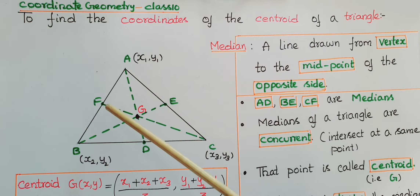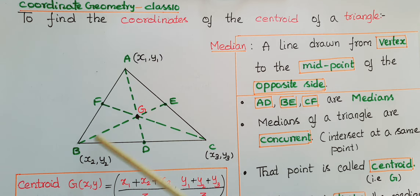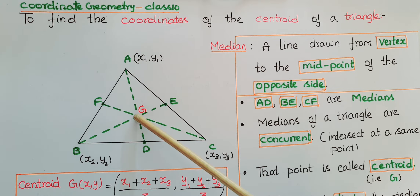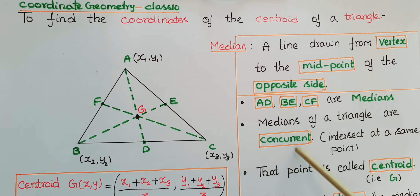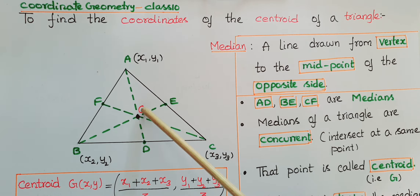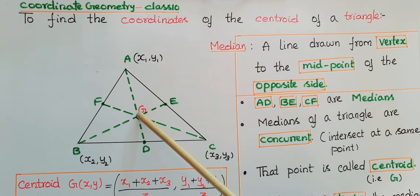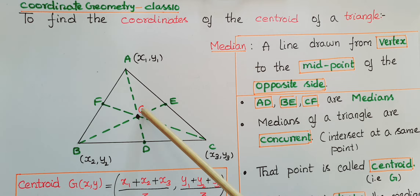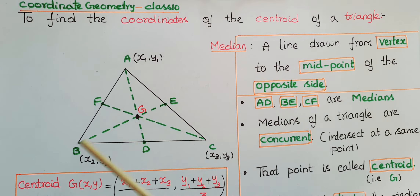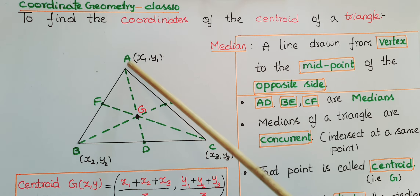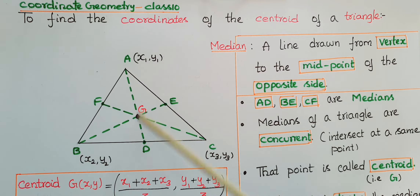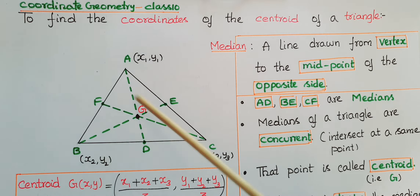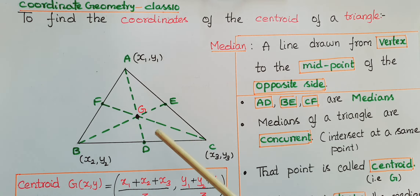If you draw the medians of a triangle, they meet at the same point — that means the medians of a triangle are concurrent, they intersect at the same point. Here G is the point where the medians intersect, and G is called the centroid of the triangle. This G divides each median in the ratio 2:1 — so G divides AD in ratio 2:1, G divides BE in ratio 2:1.